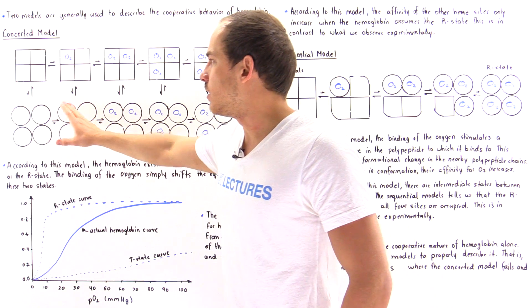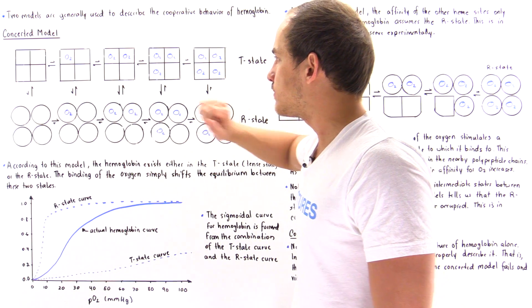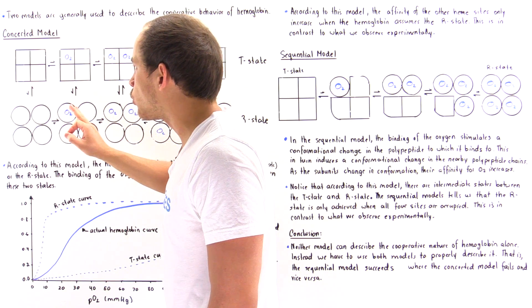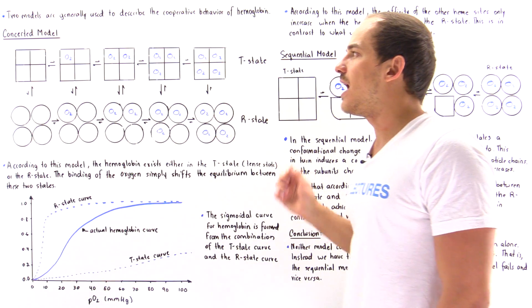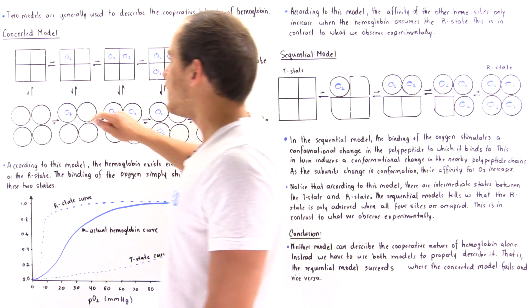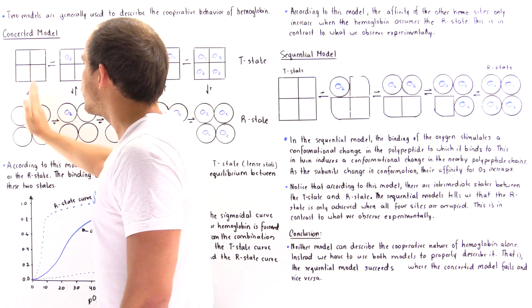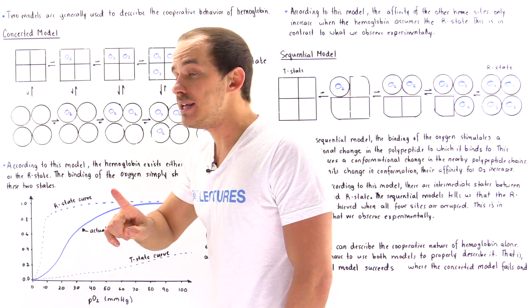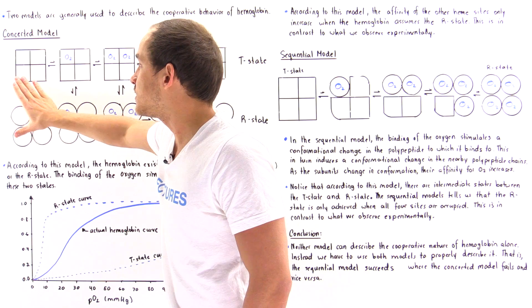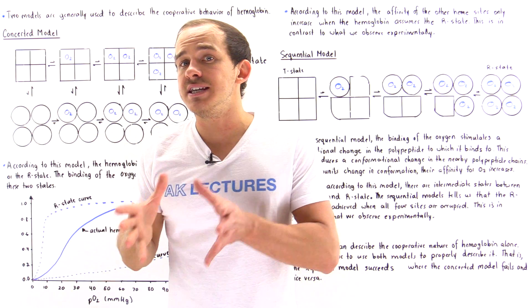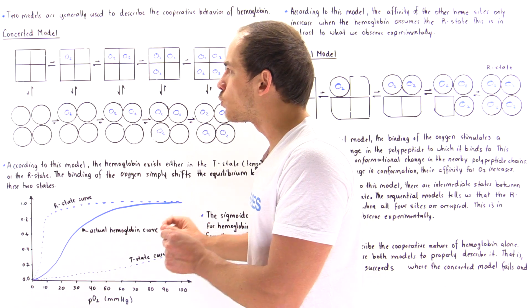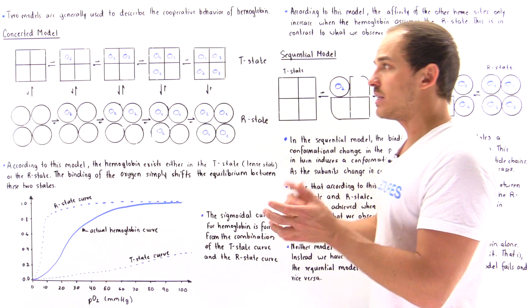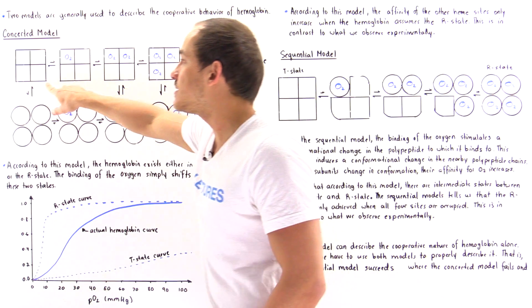Looking at the left side of this diagram, none of the heme groups on the hemoglobin actually contain oxygen. What that means is the arrow pointing toward the T state will be much longer than the arrow pointing toward the R state. So in this situation — when we have deoxyhemoglobin, when none of the heme groups contain an oxygen — the structure will be predominantly and almost exclusively in the T state.